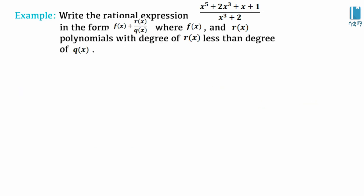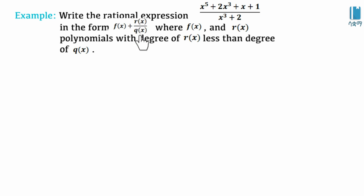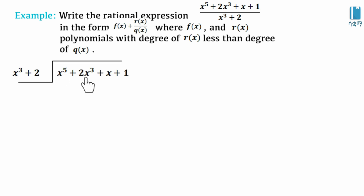Now we write the rational expression x to the power 5 plus 2x cubed plus x plus 1 over x cubed plus 2 in the form f(x) plus r(x) over Q(x). We check: the numerator has degree 5 and the denominator has degree 3, so the degree of the numerator is greater than the denominator — this rational expression is improper. We need to convert it using long division, where r(x) will have degree less than Q(x), which is x cubed plus 2.